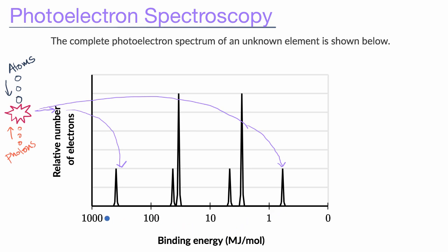One way to view the photoelectron spectrum is it gives you a sense of roughly how many electrons have various binding energies. You can see that the binding energy increases as we go to the left. The binding energy is inversely proportional to how much kinetic energy these electrons have as they get knocked off. So this spike on our spectrum at the extreme left represents the innermost electrons, and these would be the electrons with the next highest binding energy, and then the next highest.